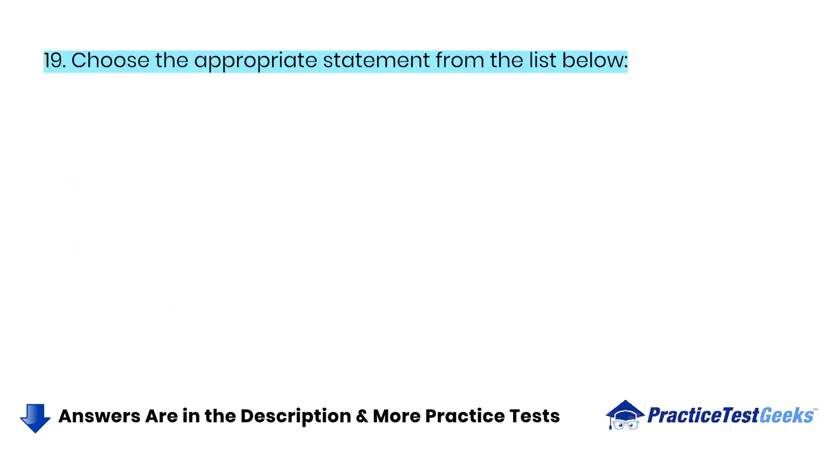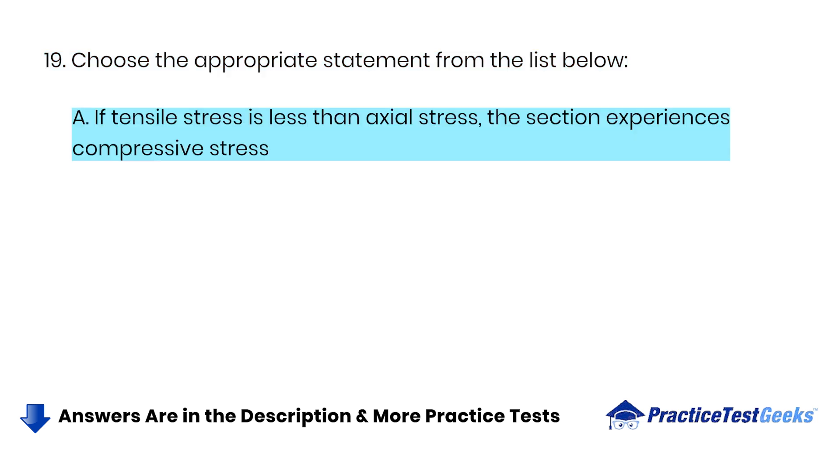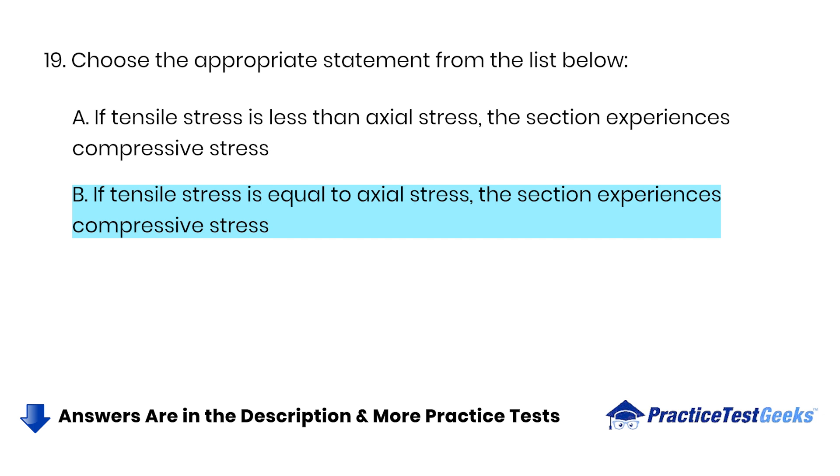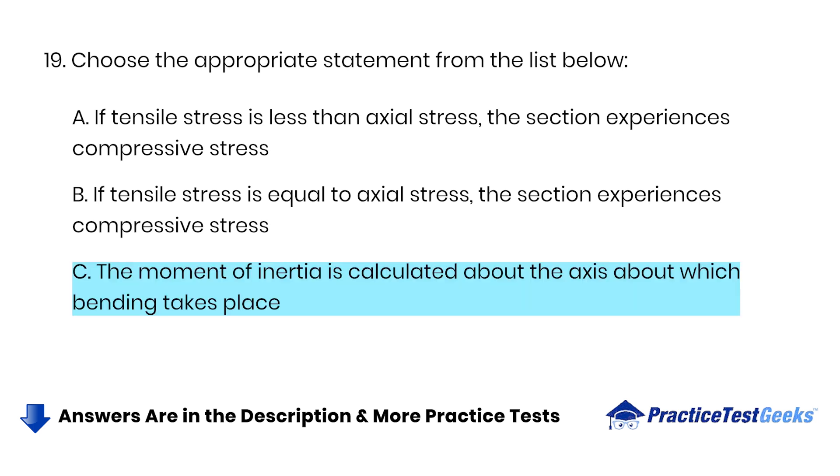Choose the appropriate statement from the list below. A. If tensile stress is less than axial stress, the section experiences compressive stress. B. If tensile stress is equal to axial stress, the section experiences compressive stress. C. The moment of inertia is calculated about the axis about which bending takes place. D. All of the above.